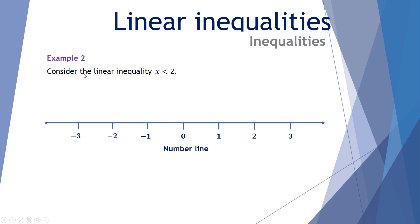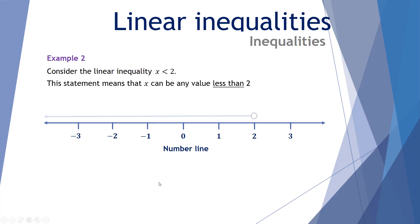Example number 2: consider the linear inequality x < 2. This statement means that x can be any value less than 2. On our number line, we have a hollow circle around the 2 with an arrow going to the left, continuing on to any number less than 2. The circle is not filled, so this represents all numbers less than 2 but does not include 2.